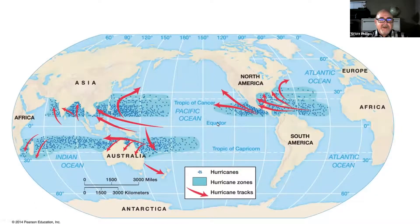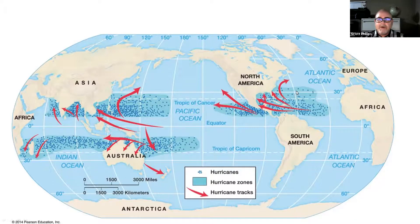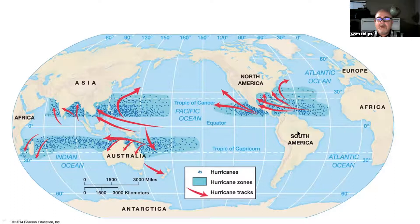This figure shows that as well. Not much is happening over in California — you don't have many occurrences there. Another thing to point out is the absence of hurricanes along the equator, and we'll talk about why that is.